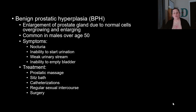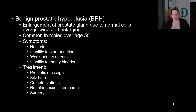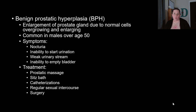Surgery may be needed to resect or reduce prostate tissue. This is done through the urethra via a transurethral resection of the prostate (TURP), requiring no surgical incisions. Preventatively, annual prostate exams — especially after age 40 — are important to catch enlargement early before it causes serious urinary difficulties.